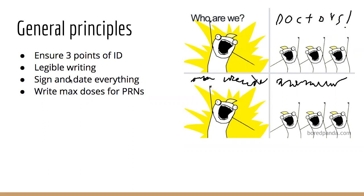First, how to physically write a prescription. Make sure you have three points of ID — if it's electronic, make sure you have the right patient file open; if it's a paper drug chart, make sure you have the right sticker. Write legibly so nurses don't misread what you've written, and sign and date everything. Write maximum doses when writing PRNs so there's a limit on how much opioid or other medication they can receive — it's on you if they receive more than what your order allows.